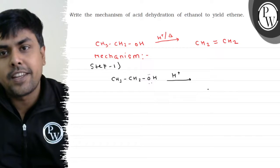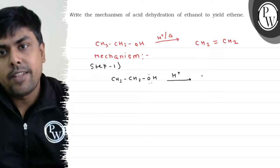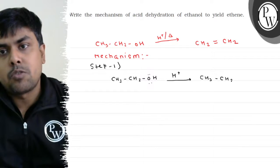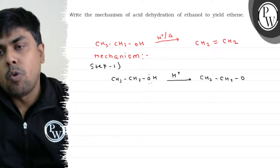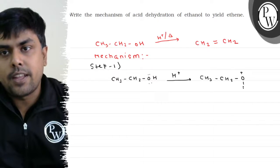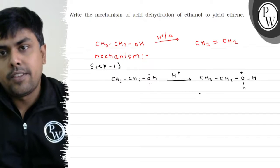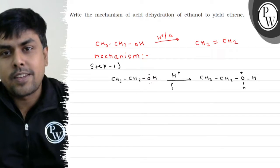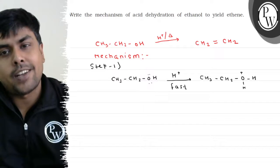H+, acid ki tara behave kerega. I will have the formation of CH3, CH2, O positive H, H. Oxonium ion. This is the formation of ion in step 1. Can I say this step will be relatively fast?